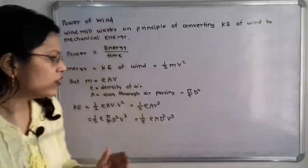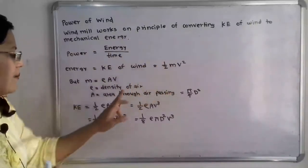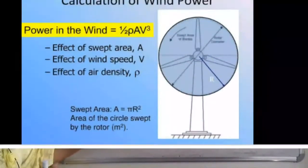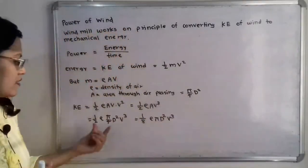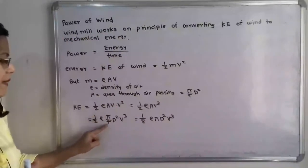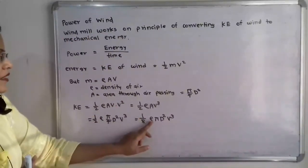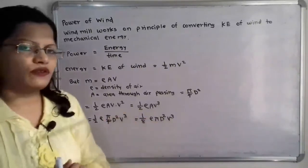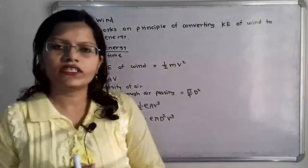Substituting the value of m as ρAv into the kinetic energy formula: KE = ½ρAv · v² = ½ρAv³. Putting in the value of A = π/4 · d², we get KE = ½ · ρ · (π/4)d² · v³ = (1/8)ρπd²v³. This is the final formula for the kinetic energy in the wind.